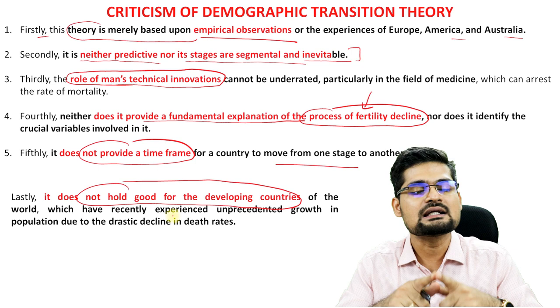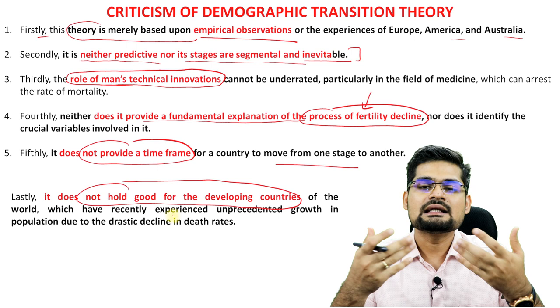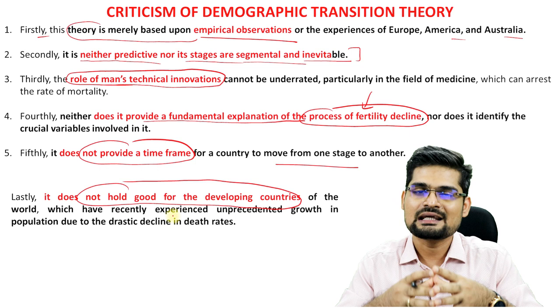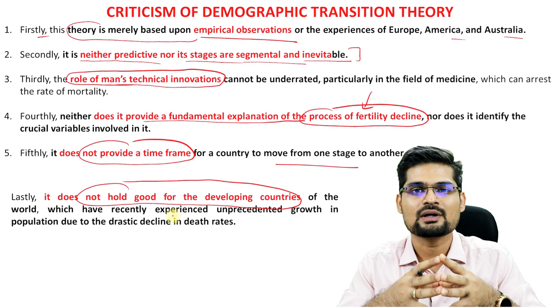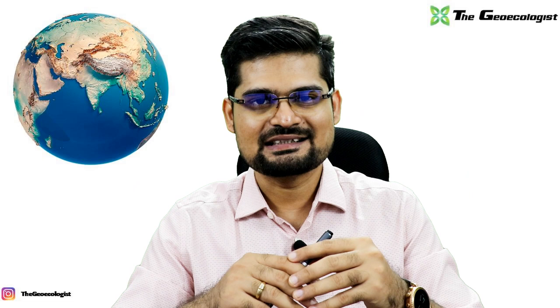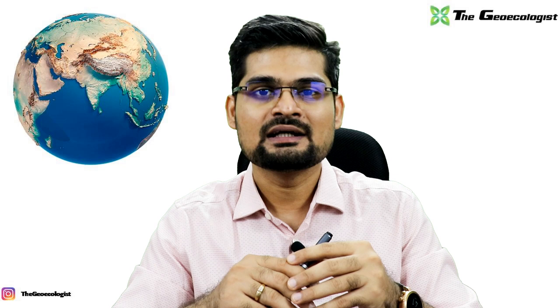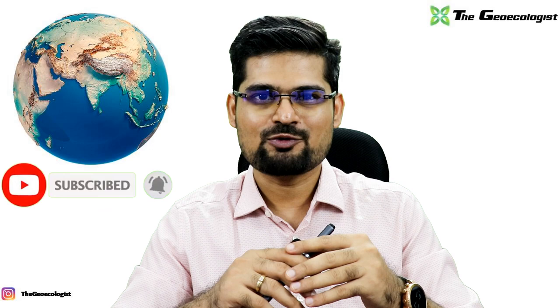Despite its limitations, the Demographic Transition Theory is a very useful tool for demographic and population studies, providing a general picture of the entire world. It is important in human geography for understanding patterns related to human settlements and population transition. In coming sessions, we will discuss more models and theories in human geography like Christaller's Central Place Theory. Stay tuned, stay safe, and best wishes.